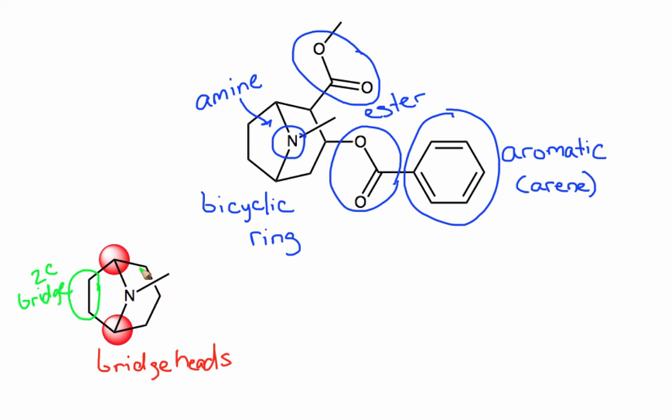Over here on the right-hand side, between these two bridgeheads, I have one, two, three, a three-carbon bridge. And then, here in the middle, I have just a nitrogen bridge. So, we'll just say that's a one-atom bridge.